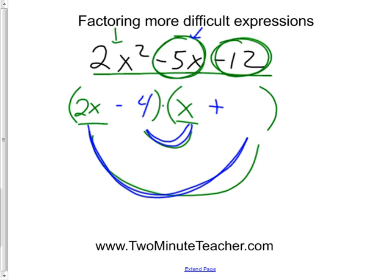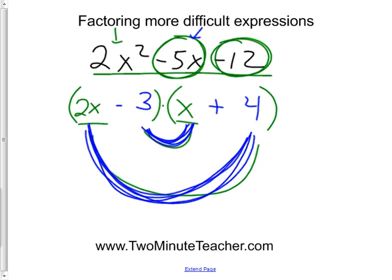4 and 3. Take a 4 here and a 3 here. Now the outside is going to make positive 6. The inside makes negative 4. 6 minus 4 would be 2 and that's not close to 5. So I'm going to reverse them again. The 4 goes here and the 3 goes here. So now the outside is 8 and the inside is 3.